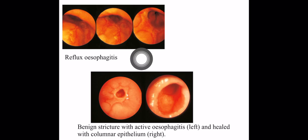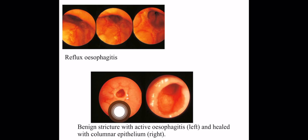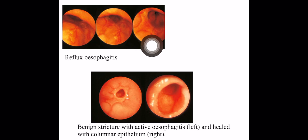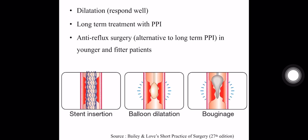This is the endoscopic finding of acute esophagitis in GERD, and this is a stricture. The white patches show esophagitis. You can dilate the stricture with balloon dilatation via endoscopy, and the lesion responds well. You can use long-term treatment with PPI, or you can perform anti-reflux surgery.